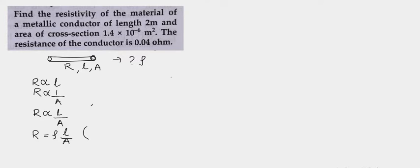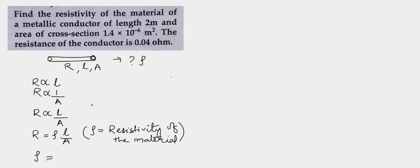Here rho is the constant of proportionality known as the resistivity of the material. Resistivity depends only on the nature of the material. Using this, if we cross multiply, we get rho is equal to R into A by L. So using this formula we will solve this question.